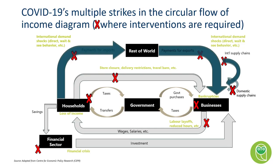Most of you would probably remember the circular flow diagram from Economics 101. This diagram is a way in which we thought about the different places in which the economy is broken after COVID-19 and where COVID-19 has impacted the economy — in terms of households being able to pay taxes, payments to the rest of the world for imports and exports, international supply chains, domestic supply chains, businesses actually going bankrupt, labour layoffs and reduced hours, and an impact on the financial sector through the banks if businesses and households can't continue to repay their debts.